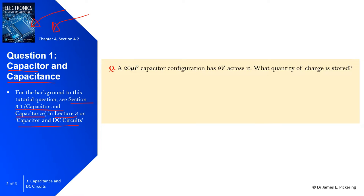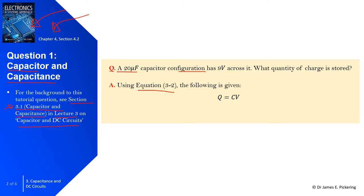In this question a 20 microfarad capacitor has 9 volts across it. What is the quantity of charge stored within the capacitor? Using equation 3.2 from the lecture — lecture three, section 3.1 on capacitor and capacitance — the quantity of charge is equal to capacitance multiplied by voltage, which in this case is 20 times 10 to the power minus 6 multiplied by 9, giving us 180 microcoulombs.